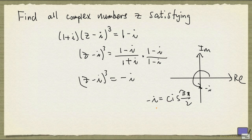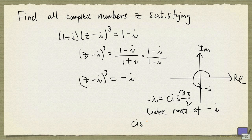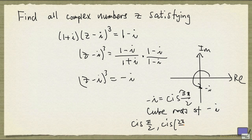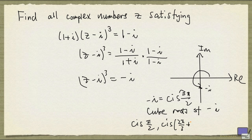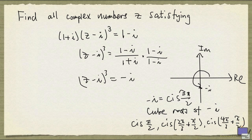And so the cube roots of minus i are going to be cis of pi over 2, cis of 2pi over 3 plus pi over 2, and then cis of 4pi over 3 plus pi over 2.